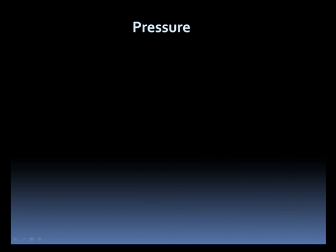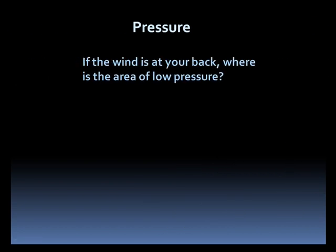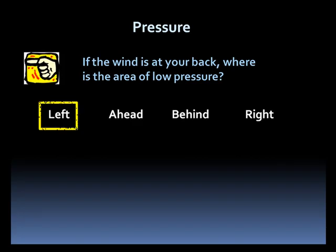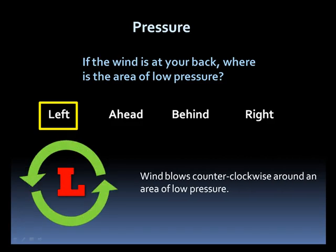How about this one? If the wind is at your back, where is the area of low pressure? Is it to your left, ahead of you, behind you, or to your right? If you said to your left, you are correct. Wind blows counterclockwise around an area of low pressure. So if the wind is hitting your back, in most cases the center of the low will be off to your left.